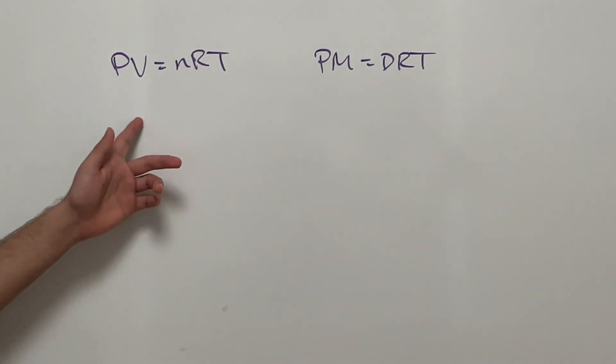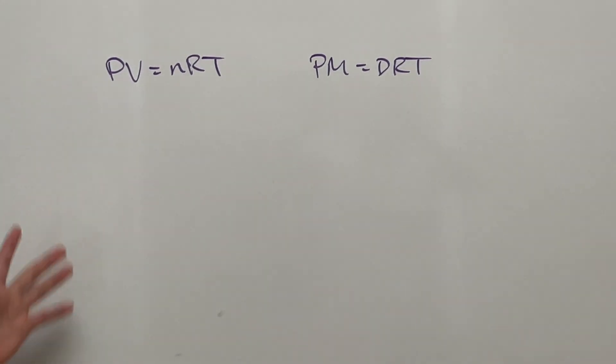We've seen the ideal gas law, we should all know this: PV is equal to nRT. But there is an interesting formula that derives from the ideal gas law, and that's PM is equal to DRT.